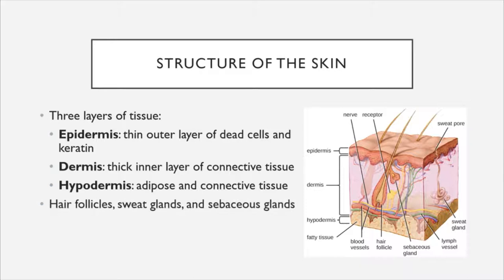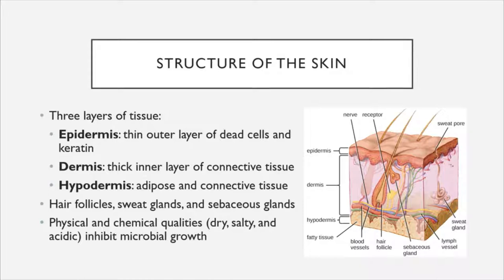The skin is interspersed with various portals of entry including hair follicles, sweat glands, and sebaceous glands. While these do present portals of entry for certain microbes, they also cause the skin to have physical and chemical properties that inhibit microbial growth. Skin is dry, salty, and acidic as a result of sweat released in perspiration and a mild amount of acid created through the sebum or oil generated from the sebaceous glands.